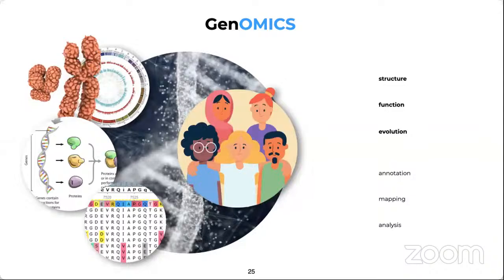The word 'genome' was first coined in Germany in the early 20th century. Genomics refers to the totality of the genome — it is an interdisciplinary field of biology focusing on the structure, function, evolution, mapping, and editing of genomes. The genome of an organism is a complete set of DNA including all of its genes, in contrast to genetics, which refers to the study of individual genes and their roles in inheritance.